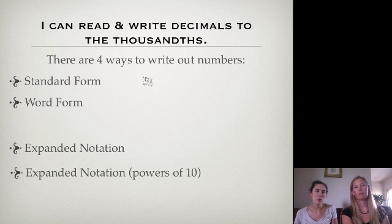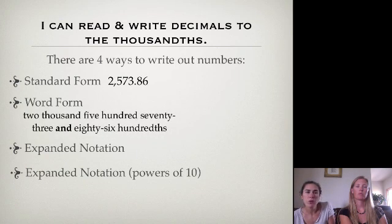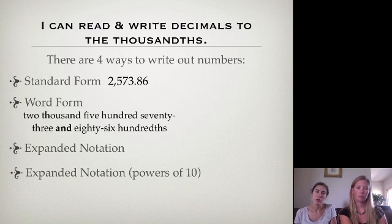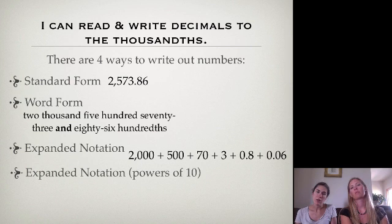So standard form is just looking at the actual number. What you normally see all the time. So there's our number there, 2,573.86. Then for word form, this is just how you would actually write it out in words and how you would actually say it. So we have 2,573 and 86 hundredths. Now expanded notation is just breaking up those numbers so you can see each place value. So we have 2,000 plus 500 plus 70 plus 3 plus 8 tenths plus 6 hundredths. All broken up.